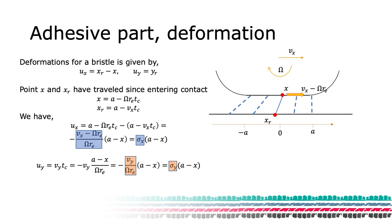We see that the speed is different for the top and the bottom of the bristle. The top is traveling with the rotation of the wheel times the effective rolling radius, while the contact is traveling with the wheel hub speed, VX.